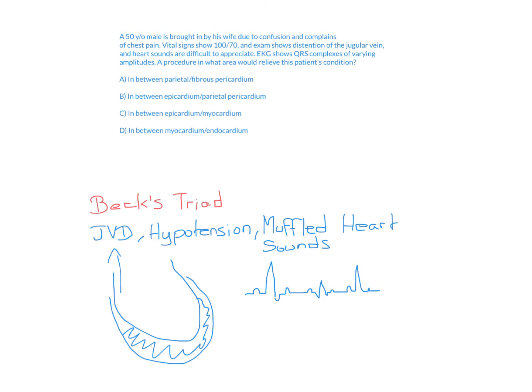This is called Beck's triad, which you'll see in these types of practice questions. The first component is JVD — jugular venous distension — where the internal jugular vein is distended beyond its normal capacity. Normally the values are between six and eight. You measure jugular venous pressure by raising the patient's head to 30 to 45 degrees, measuring the jugular vein, and adding five for the sternal angle to get to the right atrium. If it's 10, that's jugular venous distension.